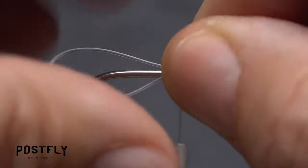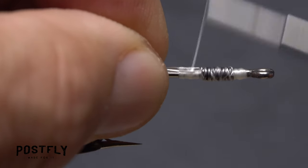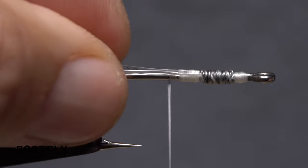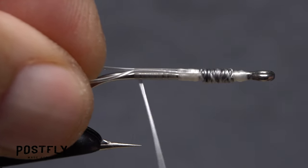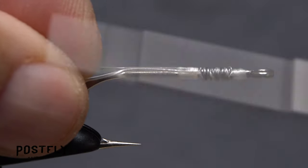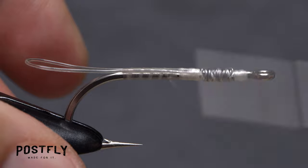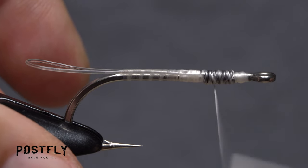Bring the other end of the mono around to form a flat loop that extends out over the hook bend and take wraps of tying thread to bind that end to the top of the hook shank behind the wire wraps. Continue taking thread wraps rearward to secure both legs of the loop to the top of the shank, all the way back to the start of the hook bend. Then advance your tying thread forward in open spiral wraps to immediately in front of the wire wraps.